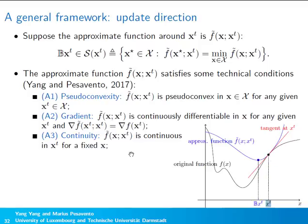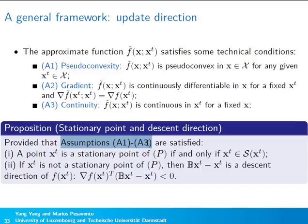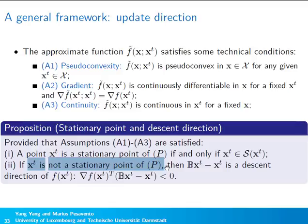The approximate function only needs to have the same gradient as the original function at the specific point x_t around which it is defined — not necessarily everywhere. Assumption A3 (continuity): the approximate function must be continuous in x_t for a given fixed x. If assumptions A1–A3 are satisfied, then x_t is a stationary point of the original problem if and only if it is an optimal point of the approximate problem defined at itself. Otherwise, bx_t minus x_t is always a descent direction.